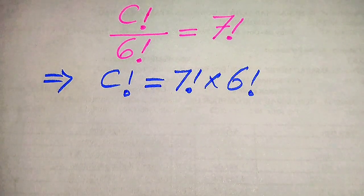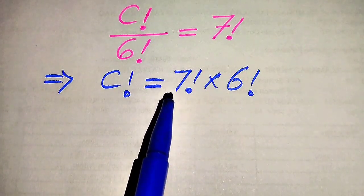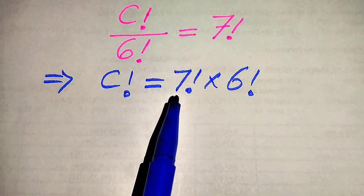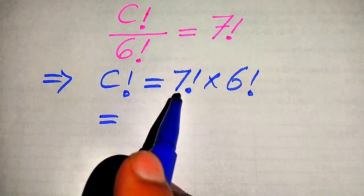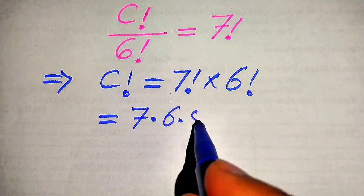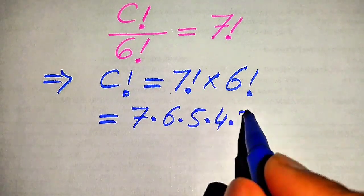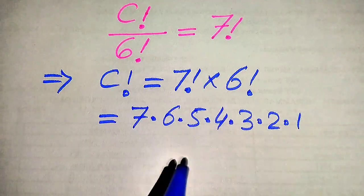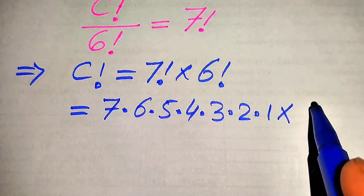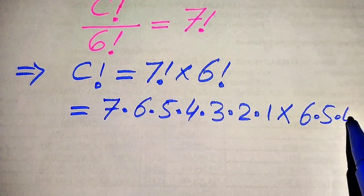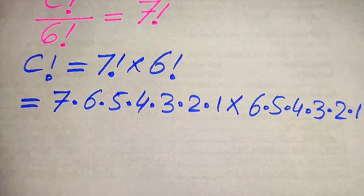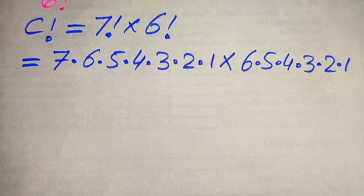You know how to expand a factorial sign — we decrease each term by 1 down to 1. So when we expand this, it is written as 7 × 6 × 5 × 4 × 3 × 2 × 1, multiplied by 6 factorial, and 6 factorial equals 6 × 5 × 4 × 3 × 2 × 1.